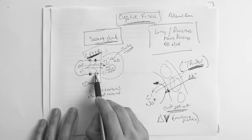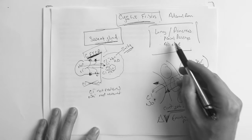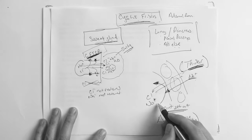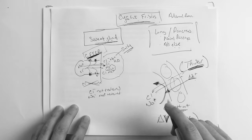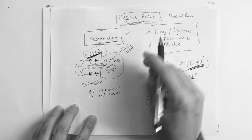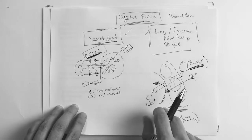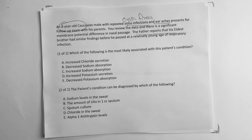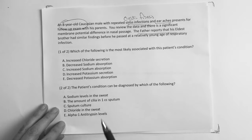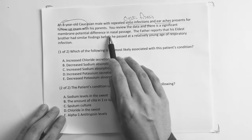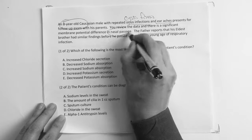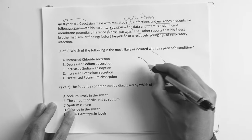And so you have to know the difference between kind of between these two. Again, sweat gland it works like this, all the stuff gets pushed out. But in everywhere else in the body it gets stuck on the inside. So now with that information you have to know where you're at and then just follow either of these rules. So back to the original question. It says an 8-year-old Caucasian male with repeated sinus infections. You review the data, there's a significant membrane potential difference in the nasal passage. Okay so we're here, right? So now we're dealing with this guy. It can't get out.